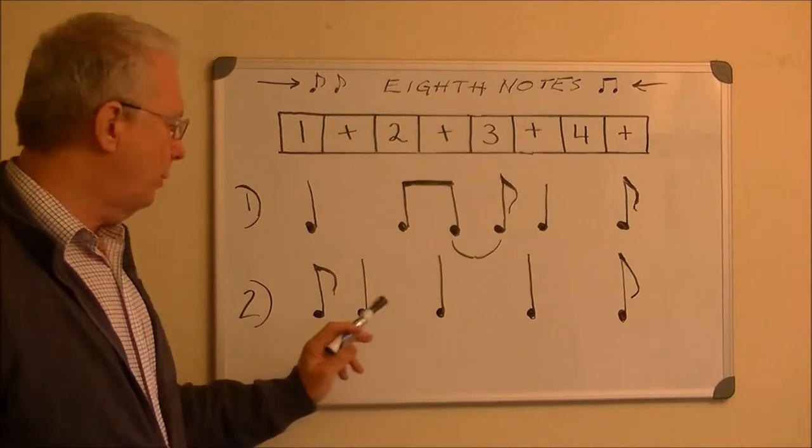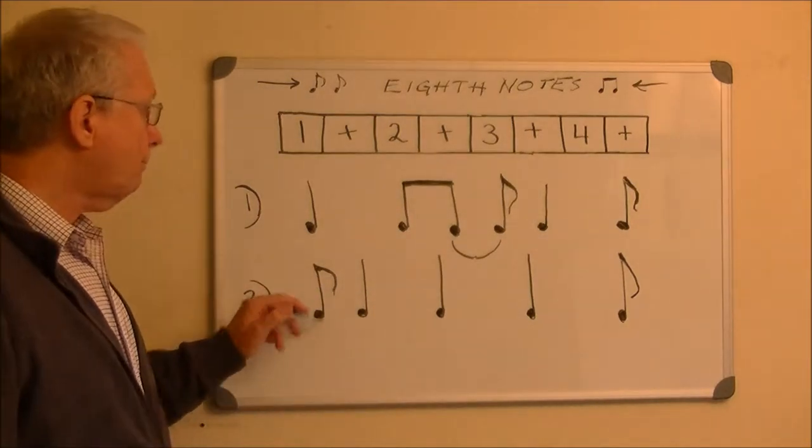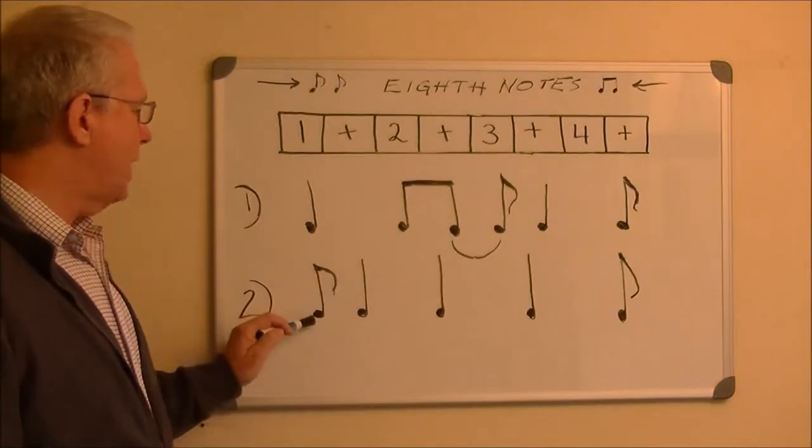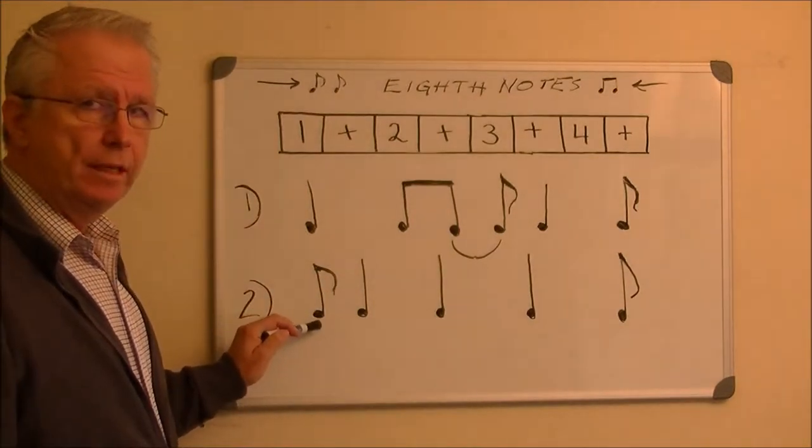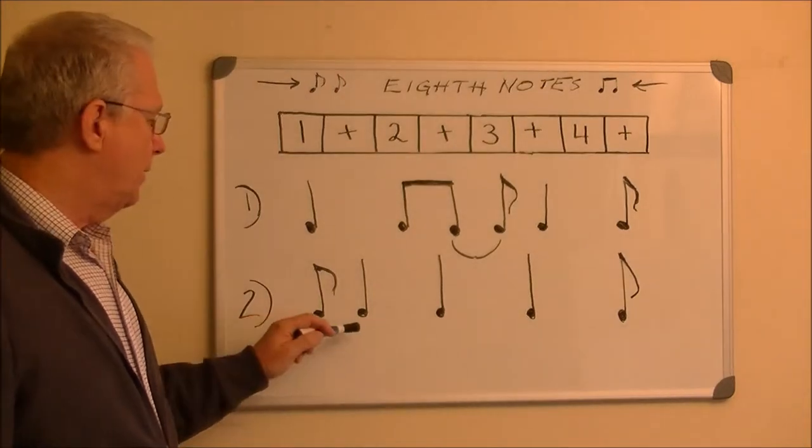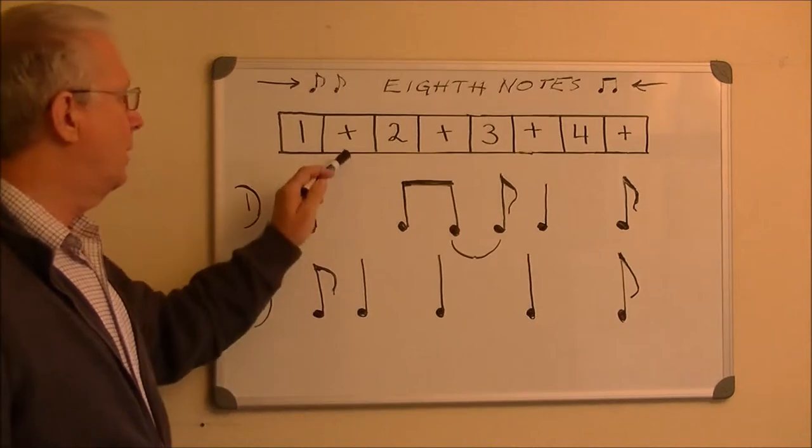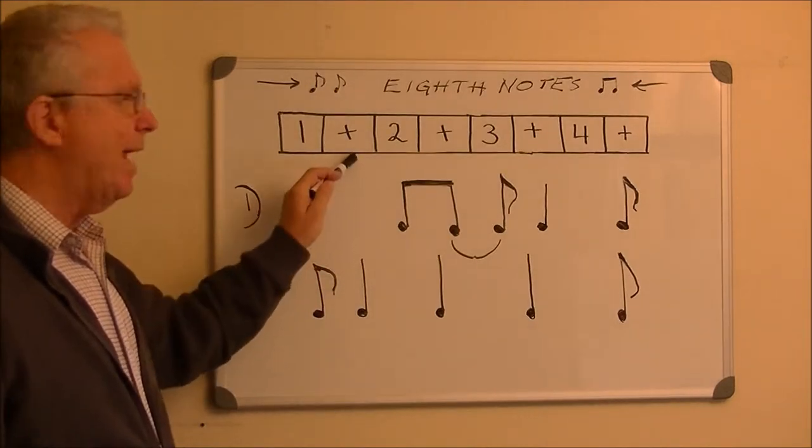When we look at the bottom measure, we can break it down the same way as the top measure. This is the first note in the measure and it belongs on 1. This is the second note in the measure. This 1 is an 8th note so the next note begins on the and of 1.